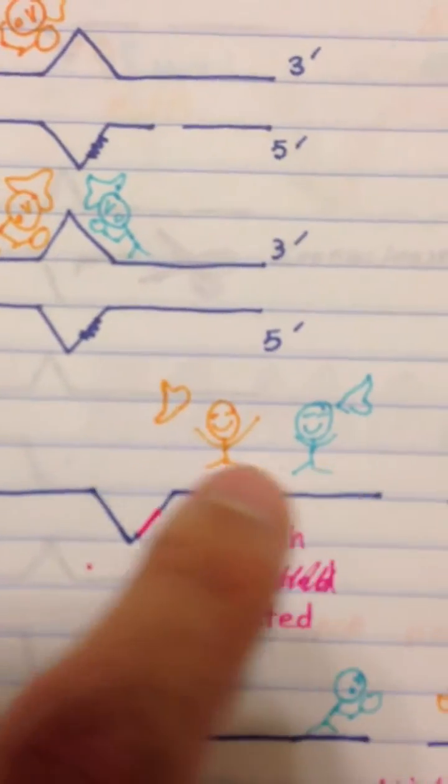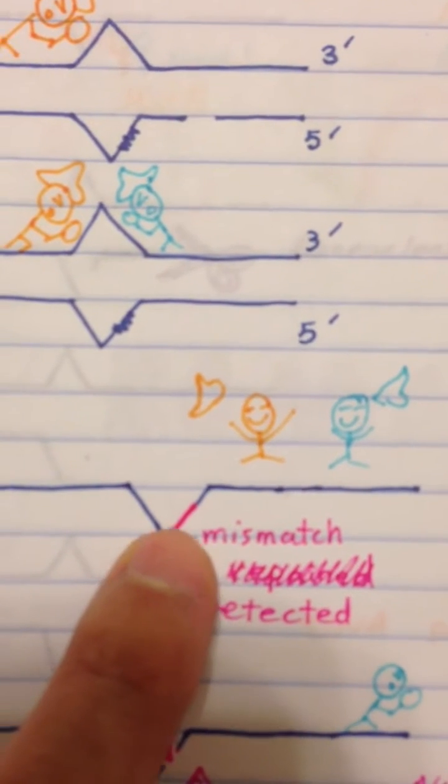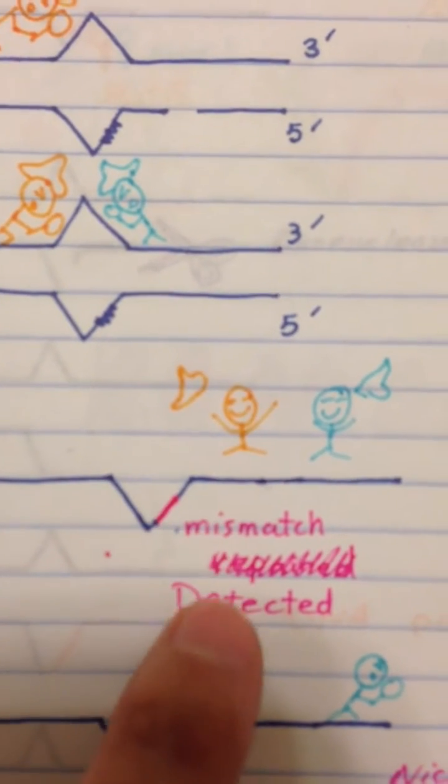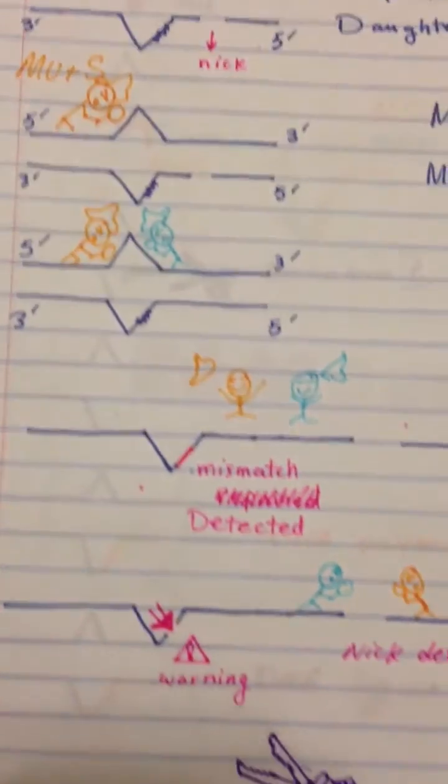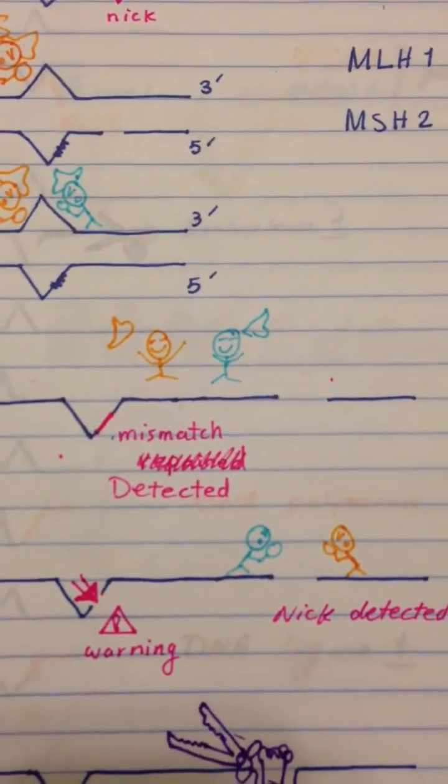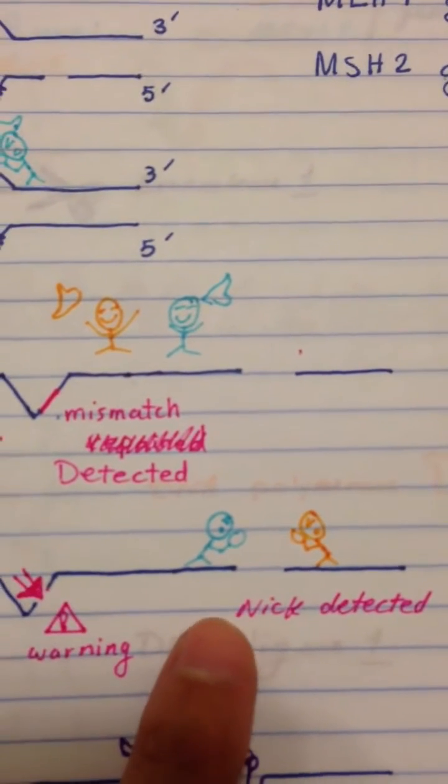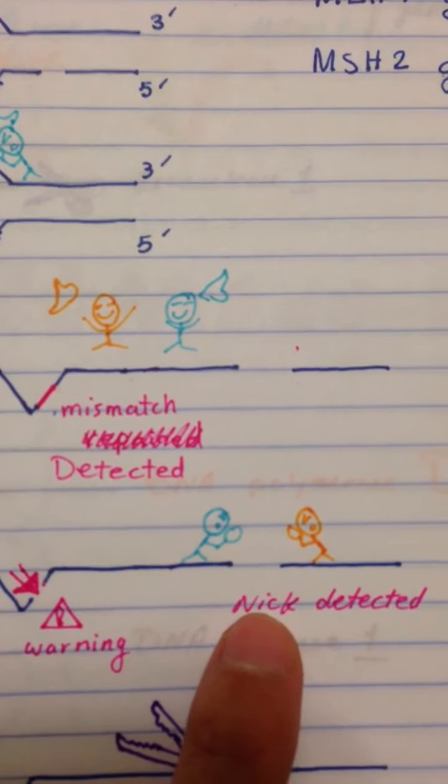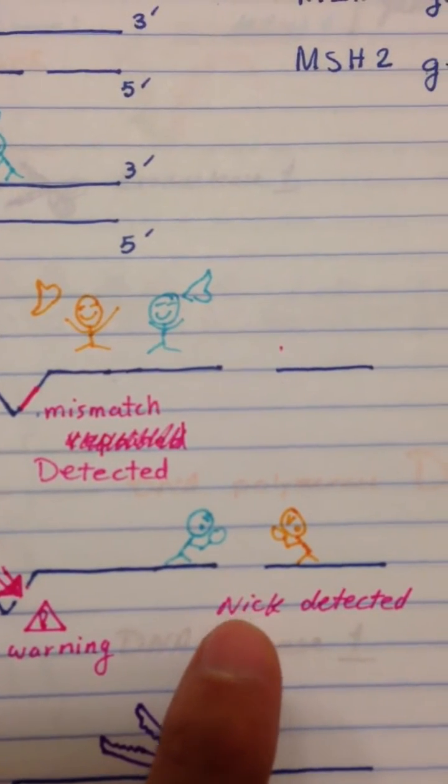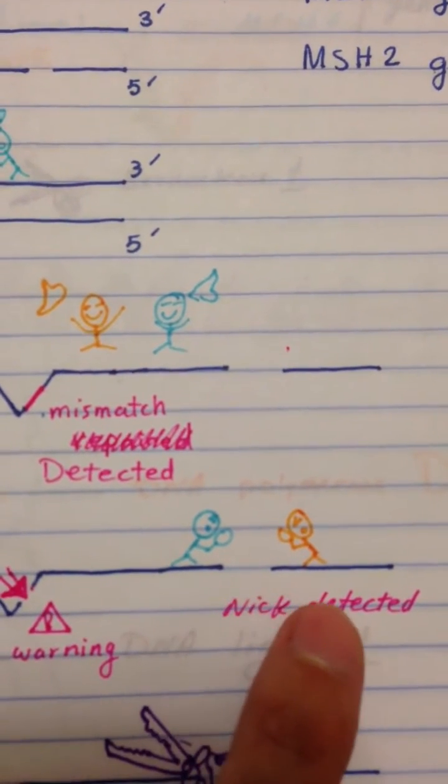Finally, this complex succeeded to detect the mismatch part. After that, they continue their job until they reach a nick. What is the nick? The nick is the part of the DNA that's not attached to the rest of the DNA.